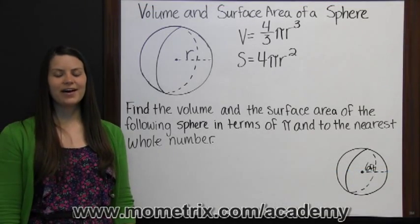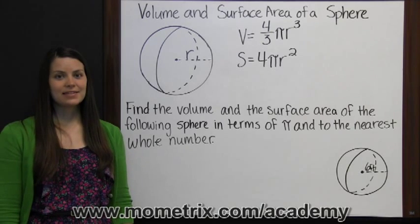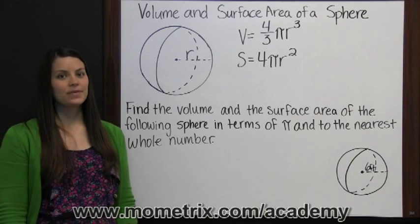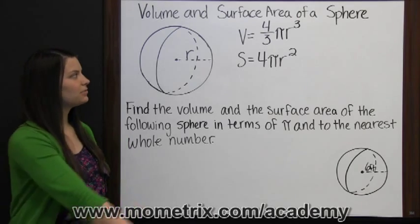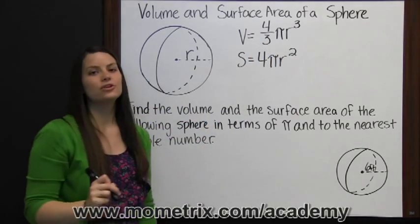Volume and surface area of a sphere. Volume is the space that a figure occupies. The volume of a sphere is found by multiplying four-thirds times pi times the radius cubed.